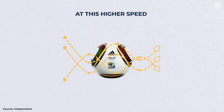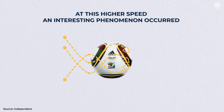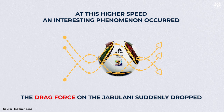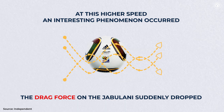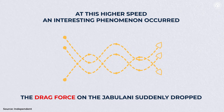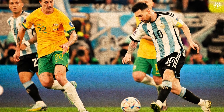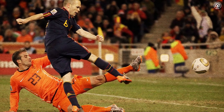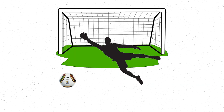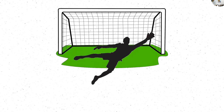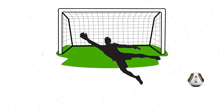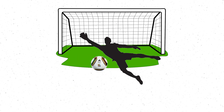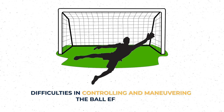This higher critical speed meant that the airflow around the Jabulani became turbulent and unpredictable at a significantly faster pace compared to traditional footballs. At this higher speed, an interesting phenomenon occurred — the drag force on the Jabulani suddenly dropped. This unexpected change in aerodynamics contributed to the erratic swerves and dips in the ball's flight path. In the high-speed and precision-driven world of professional football, where shots, crosses, and passes require exceptional accuracy, the Jabulani's behavior in the air became highly problematic. The faster transition to turbulent airflow made it challenging for players to predict the ball's trajectory, leading to difficulties in controlling and maneuvering the ball effectively.